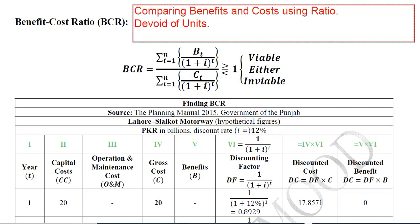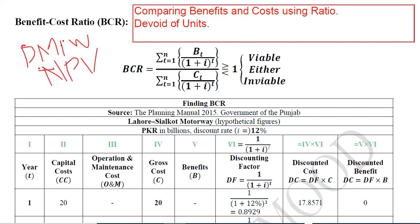In this video, we will learn about the second discounted measure of project worth (DMPW) that will guide us about the viability of a project. The first one we learnt was about NPV, and this one is about BCR. It is called the benefit-cost ratio because we compare benefits and costs using the ratio method.